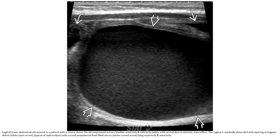Lower abdominal ultrasound in a patient with cloaca shows a decompressed urinary bladder anteriorly and inferiorly due to intrinsic mass effects. The vagina is markedly distended with layering echogenic debris, with a small pre-pubertal uterus lying posterior to it.